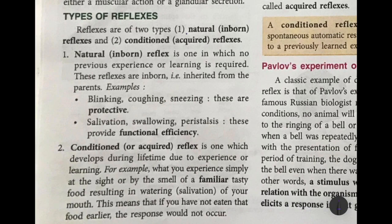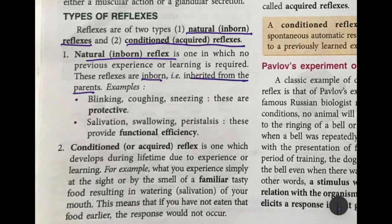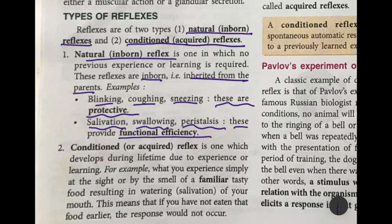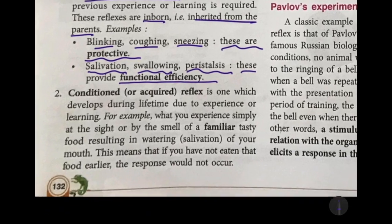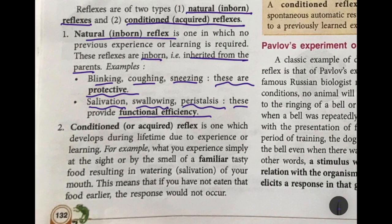There are two types of reflexes: one is natural and inborn — you don't have to learn it — and one is conditioned and acquired, that is, you learn it through experience. A natural or inborn reflex requires no previous experience; it is inherited from the parents. Examples include blinking, coughing, sneezing — which are protective reflexes — and salivation, swallowing, and peristalsis, which provide functional efficiency.